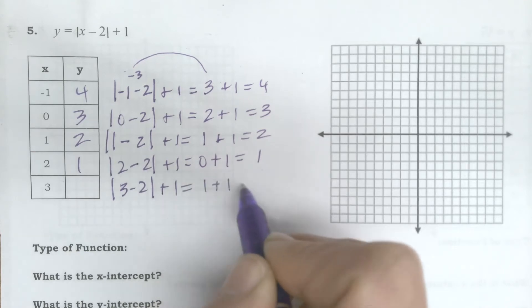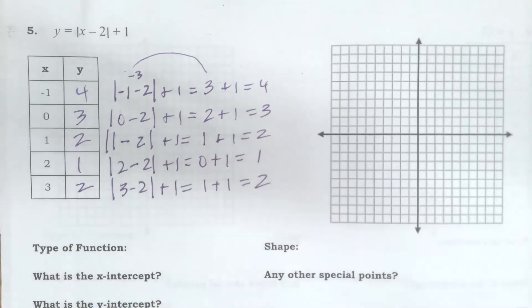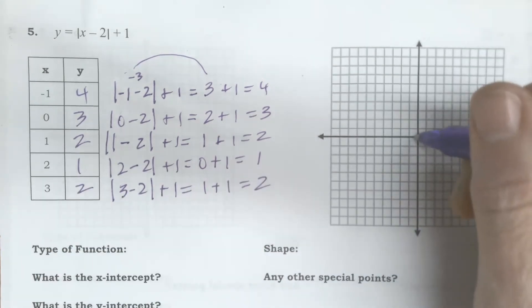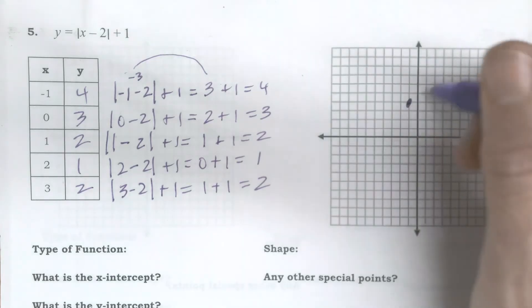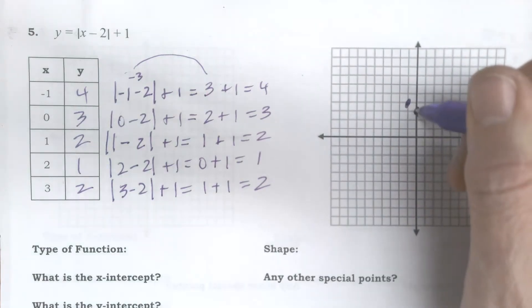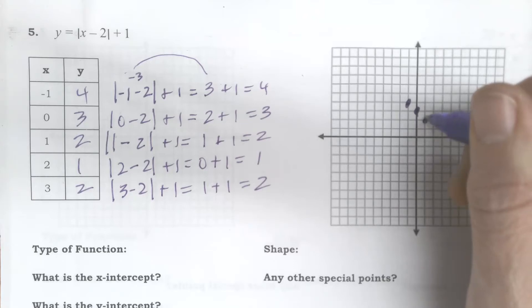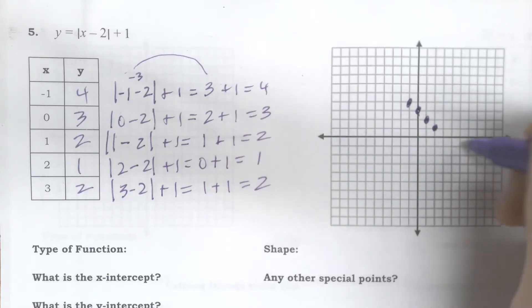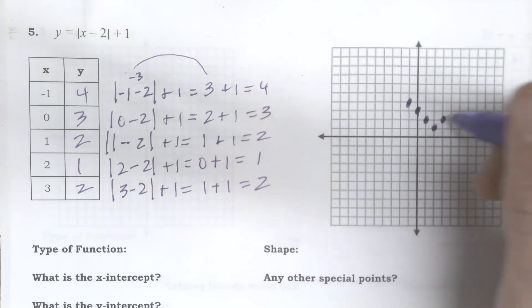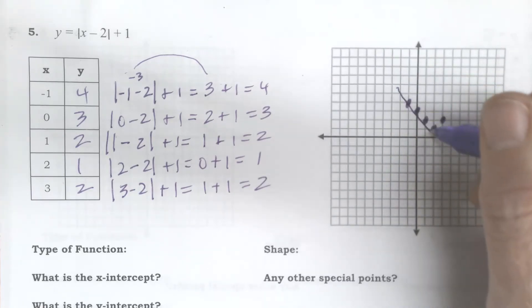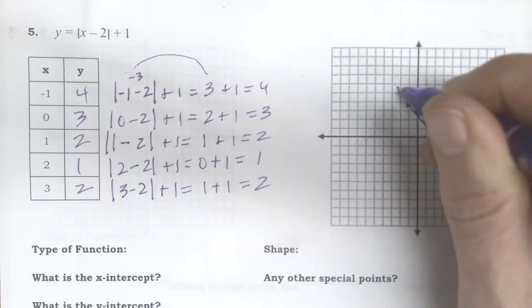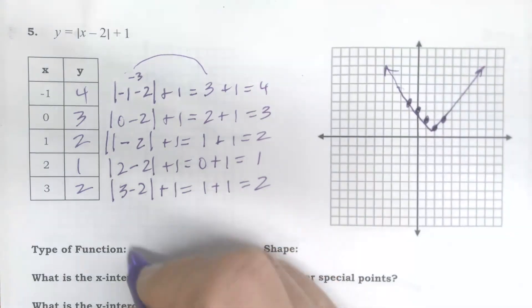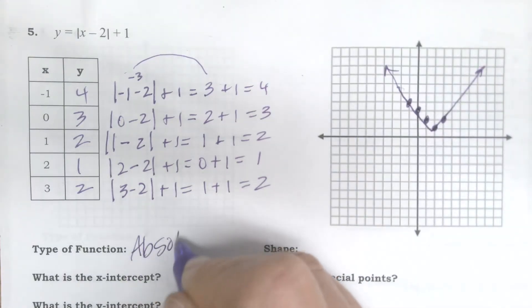So I'll plot those points. Negative 1, 4. 0, 3. 1, 2. 2, 1. 3, 2. Okay, so this looks like it goes in the shape of a V. What type of function is this? It's an absolute value.